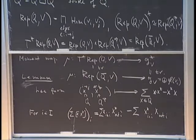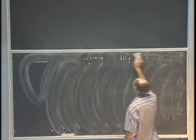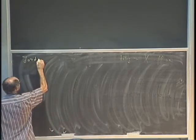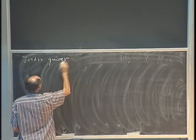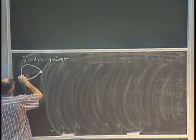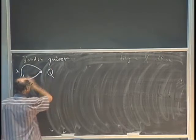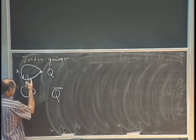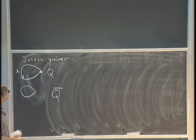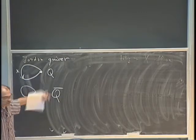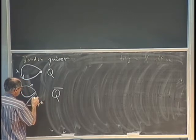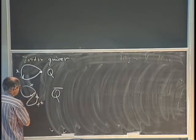The double Q-bar has two loops: one called x and one called x-star. The dimension is just one integer n, the dimension of the vector space at that vertex. Representations of Q-bar of dimension n are just pairs of matrices from C^n to itself — it's GL_n times GL_n with no conditions.